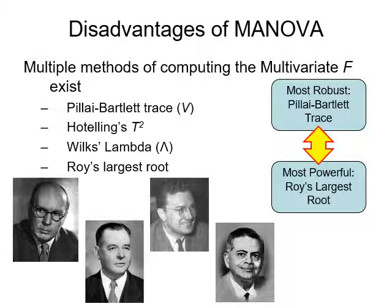There are multiple methods of comparing the multivariate F. Like repeated measures ANOVAs, you get multiple tests. The discussion is about the most robust test versus the most powerful test. A robust test means if it says something is significant, you can be certain it's significant — it's cautious about p-values and robust to violations of assumptions. The most powerful test is very susceptible to violations of assumptions, making your p-value untrustworthy, but it is much more likely to find an effect. Our most robust test is Pillai's Bartlett's Trace.